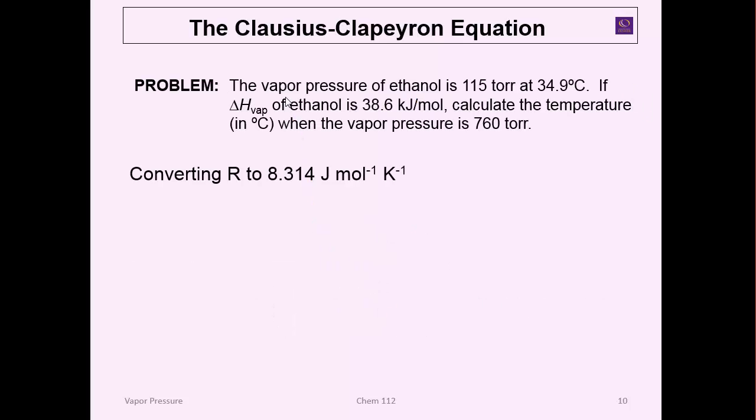Let's do a couple problems. Here's one where we're basically trying to figure out what temperature would you have to raise it to to get to a vapor pressure of 760 torr if you started at 115 torr. So basically we just set up the equation and we're going to plug and chug. The only issue right now is that these temperatures are in Celsius. So we got to make a little conversion.